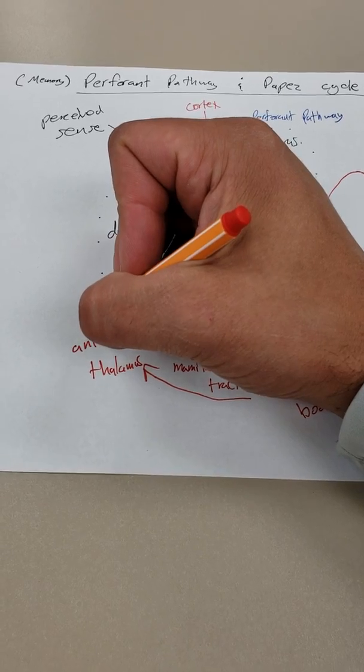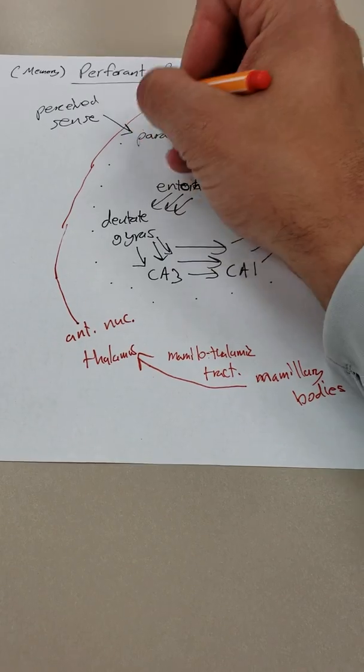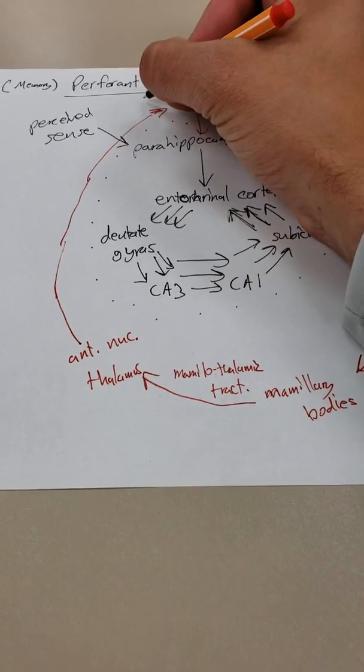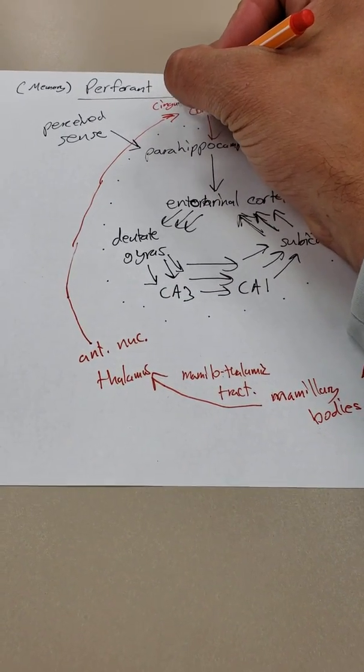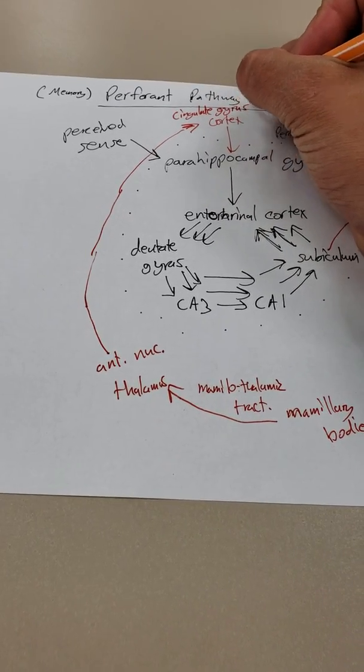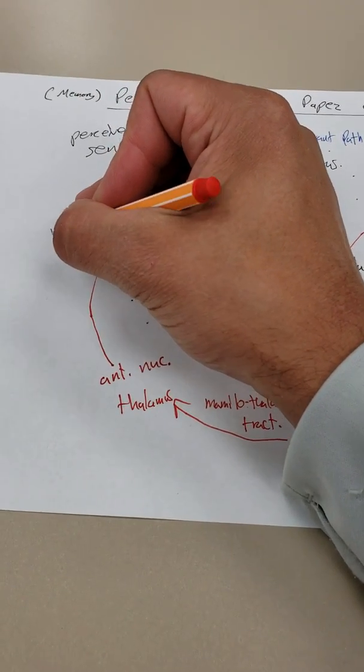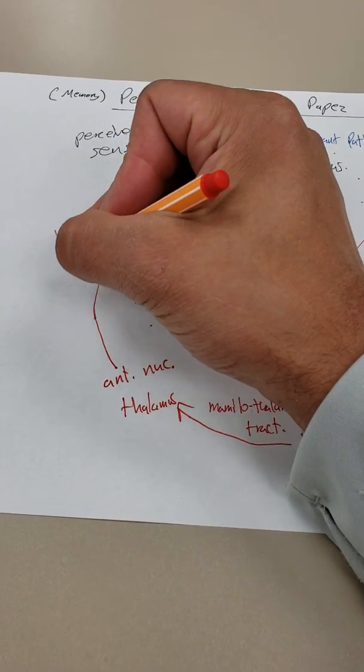Finally, now that we have this information in the thalamus, we want to bring it back to our cortex. So, usually we bring it to our cortex, specifically the cingulate gyrus. Because, remember, these are all limbic functions. And to get here, we travel through our old friend, the internal capsule.